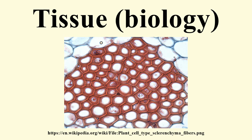Plant tissues are categorized broadly into three tissue systems: the epidermis, the ground tissue, and the vascular tissue. The epidermis consists of cells forming the outer surface of the leaves and of the young plant body. The primary components of vascular tissue are the xylem and phloem, which transport fluid and nutrients internally. Ground tissue is less differentiated than other tissues and manufactures nutrients by photosynthesis and stores reserve nutrients.